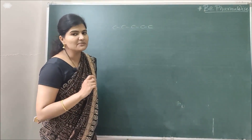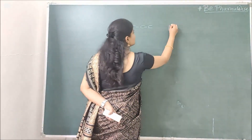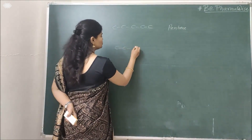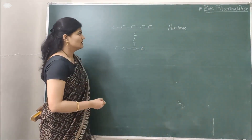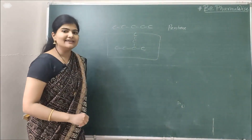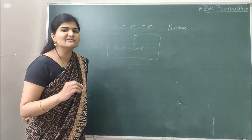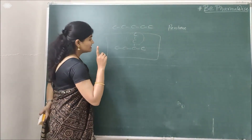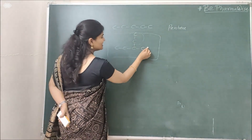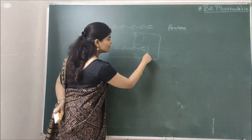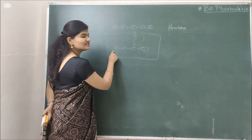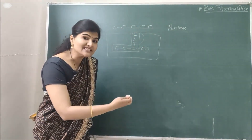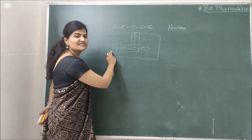Let's give an IUPAC name to a structure. If there are 5 carbon atoms, it is a pentane molecule. Now consider another structure — you might say 4 carbons in the horizontal chain with one substituent, but wait: if you trace another path through the molecule, you can count 5 carbons. Since we should always select the chain with the highest number of carbon atoms, the 5-carbon chain is selected as the longest continuous chain and becomes the parent.